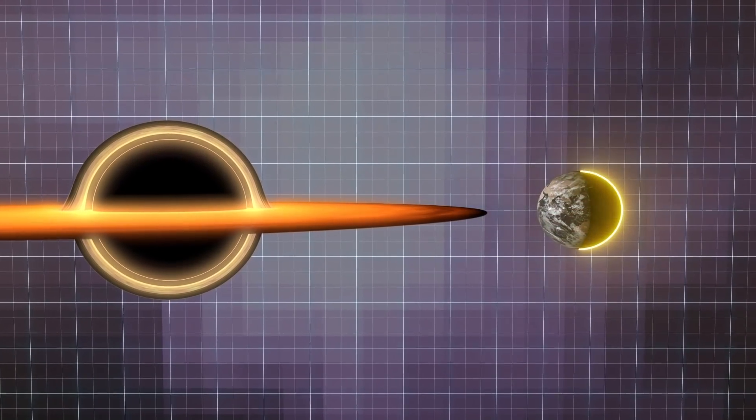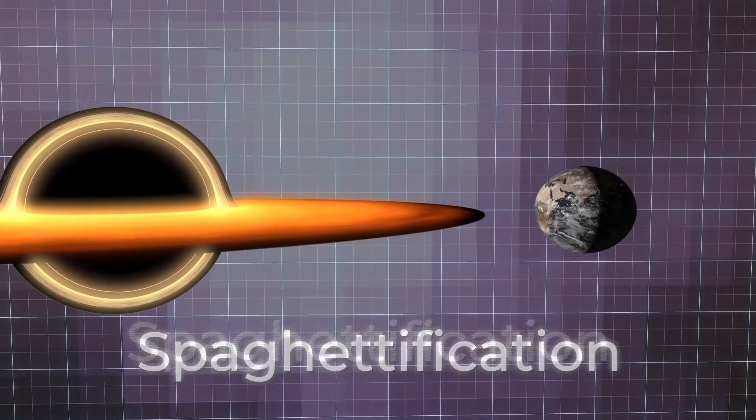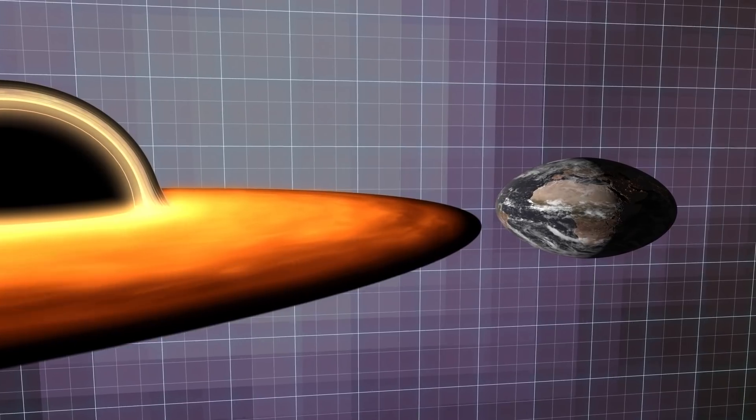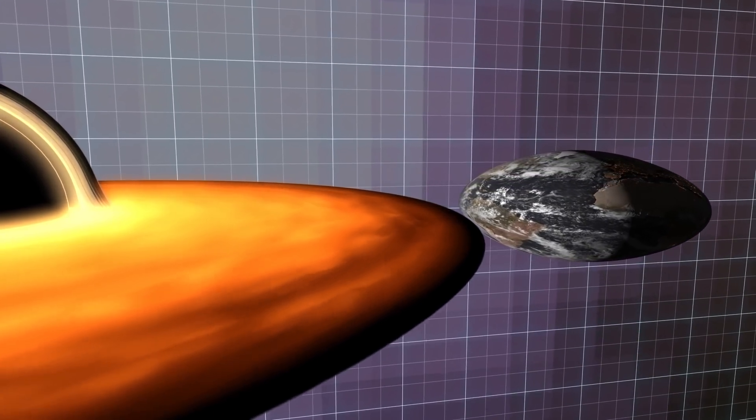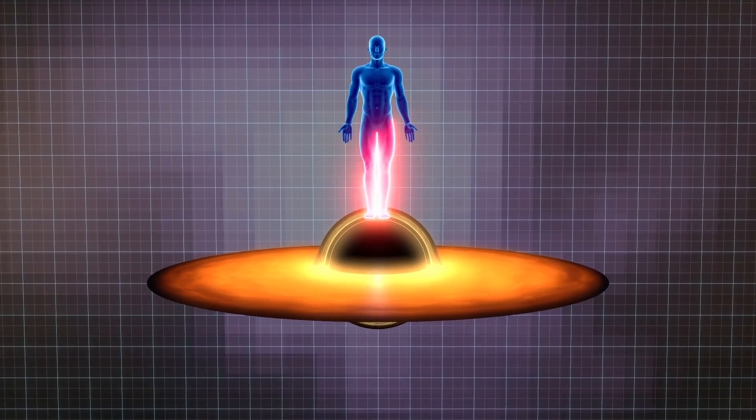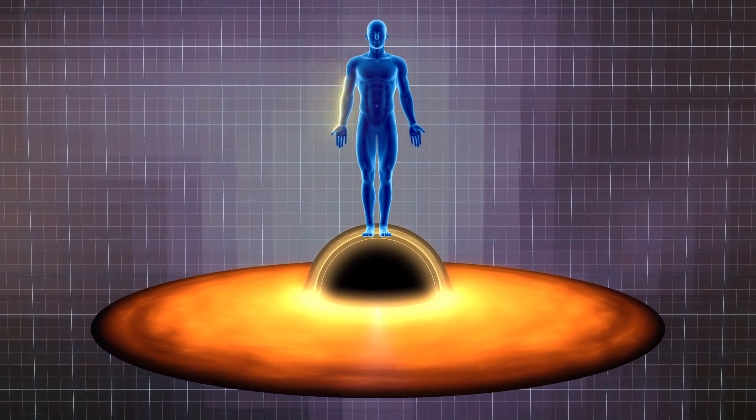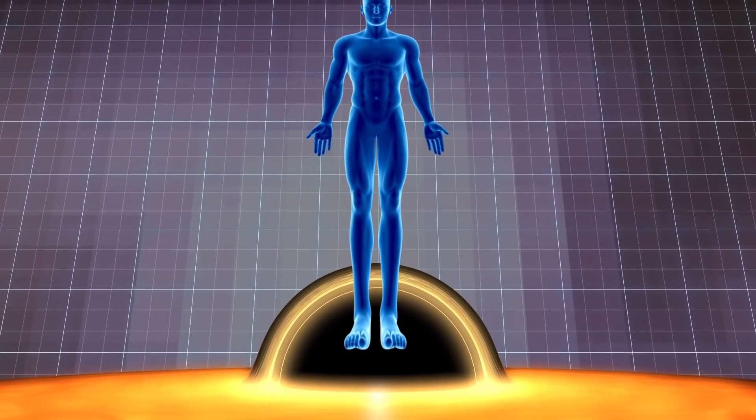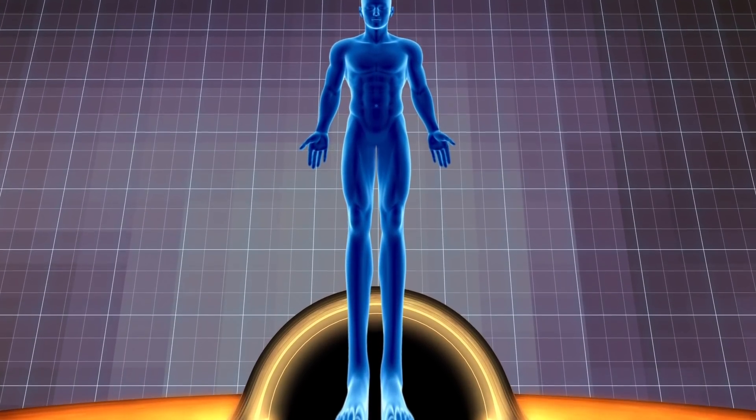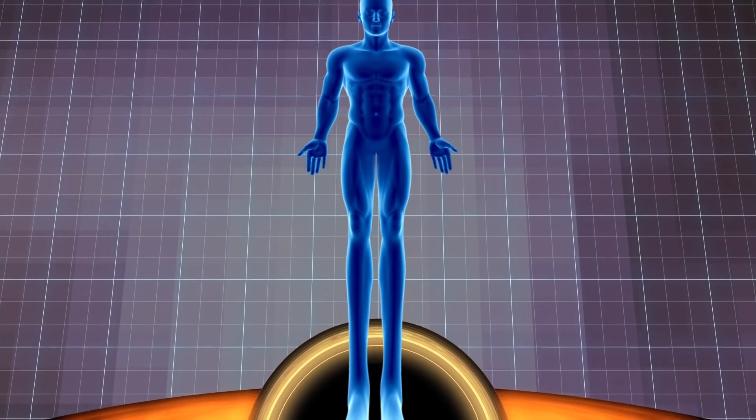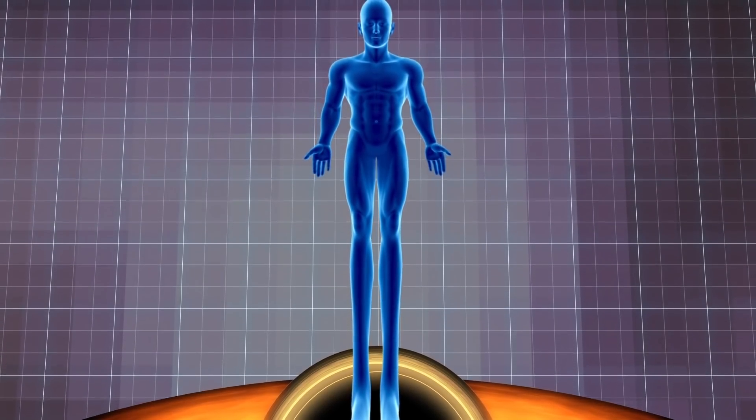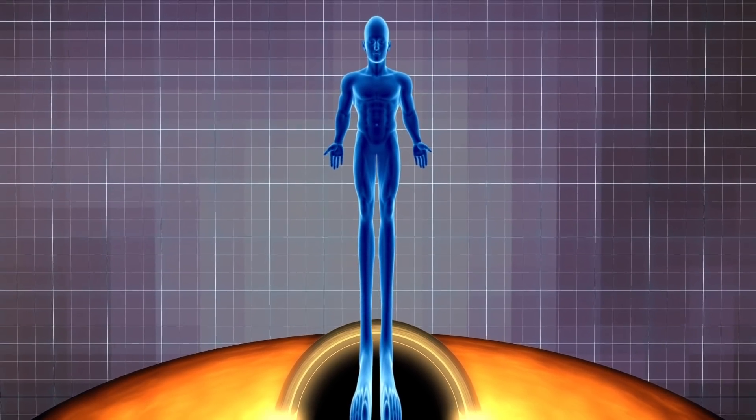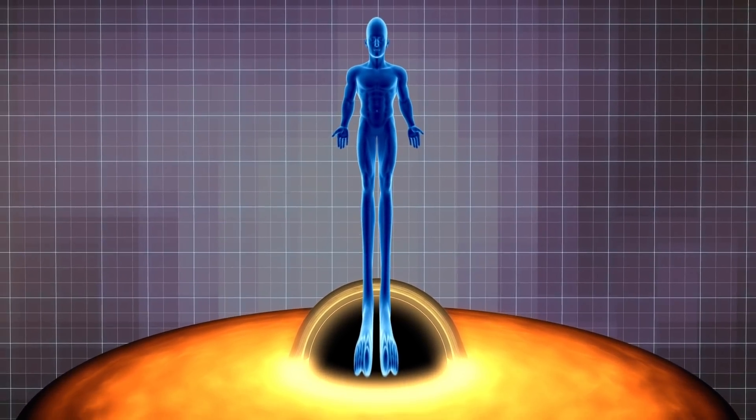One side of the Earth would experience more gravity than the opposite. So-called spaghettification would begin. It's quite difficult to imagine this in the example of an entire planet, but it's easy if we talk about a person. If you fell into a black hole feet first, your feet would be more intensely attracted by gravity than your head. They would be stretched first. Even worse, your hands would be pulled a little in the opposite direction. As a result, you would not only stretch out but also shrink towards your center.